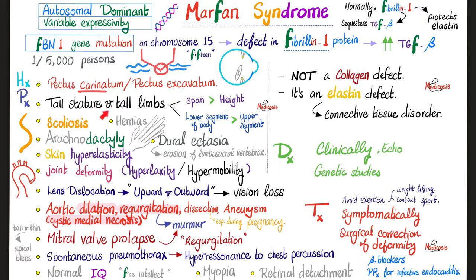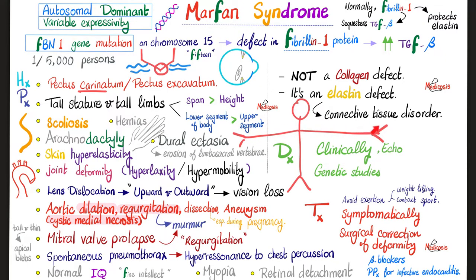In Marfan syndrome, the arm span exceeds the height. Normally span equals height, but in Marfan the span is greater. Also, the lower body segment is taller than the upper body segment when divided at the umbilicus. The vertebral column is not straight — scoliosis. Patients get hernias such as inguinal hernia, and have spider-like fingers and toes — arachnodactyly.